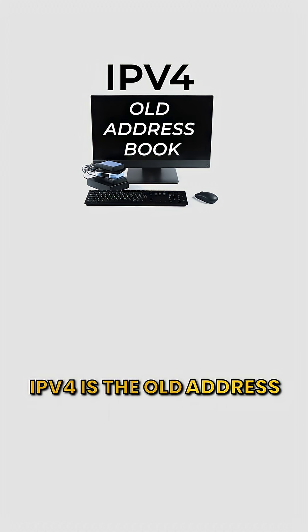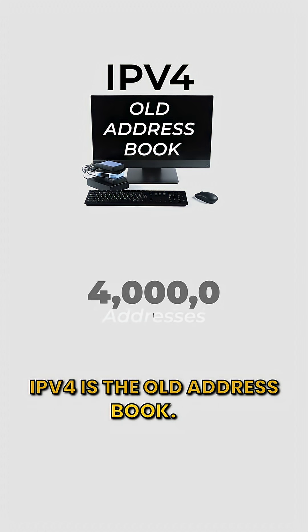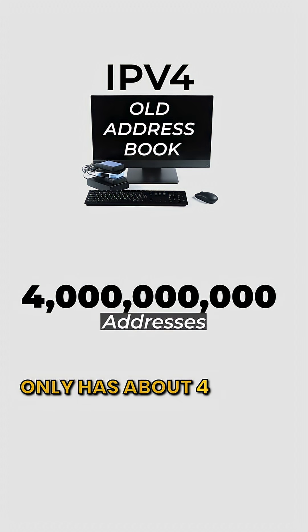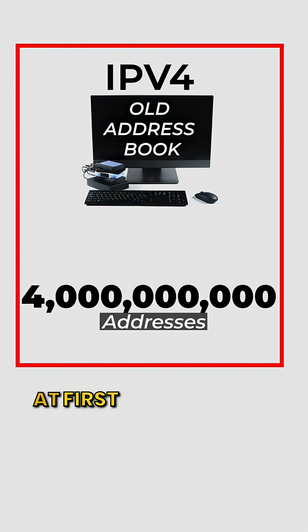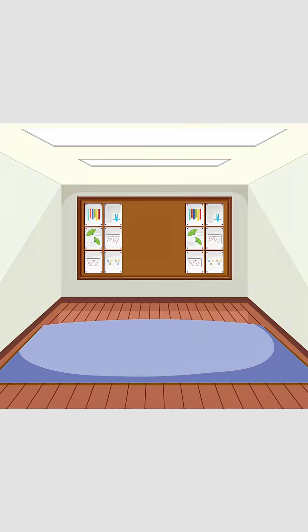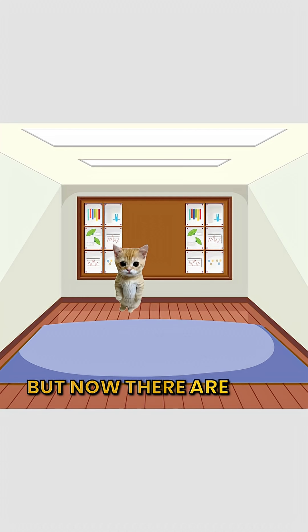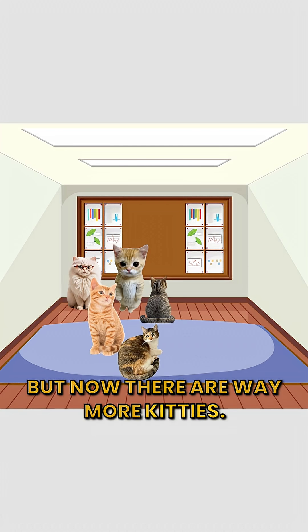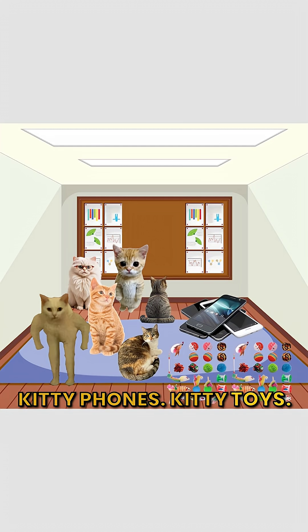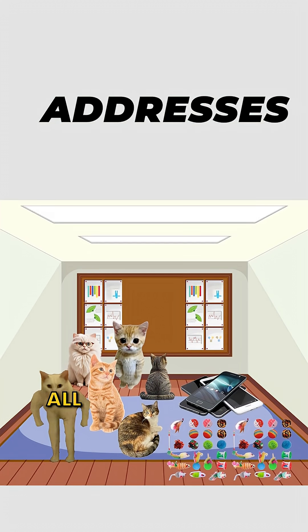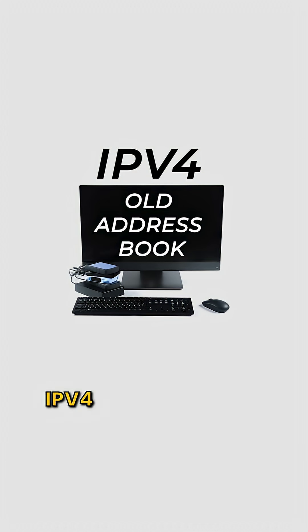IPv4 is the old address book. It only has about 4 billion addresses. At first it was plenty, but now there are way more kitties. Kitty phones, kitty toys — all need addresses. IPv4 is running out.